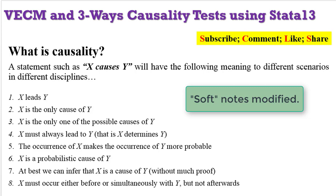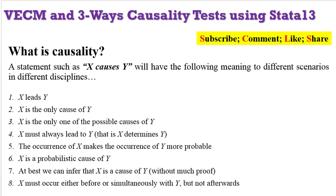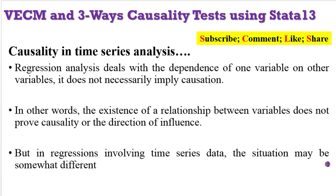In case you are asked what is causality, you can answer using any of the 8 short phrases you can see on the screen. You can say X leads to Y, or X is the only cause of Y, or perhaps X is one of the possible causes of Y. X must always lead to Y — that is, X determines Y. You can also say the occurrence of X makes the occurrence of Y more probable, or X is a probabilistic cause of Y. At best, you can say we can infer that X is the cause of Y, or that X must occur either before or simultaneously with Y, but not afterwards. Also know that regression analysis deals with the dependence of one variable on other variables, but that does not always imply causation.